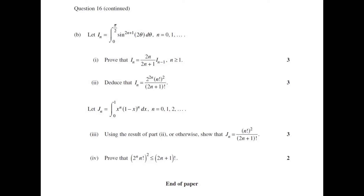Then we're given a new integral J_n, which is equal to the integral from 0 to 1 of x^n · (1-x)^n dx. Part 3 is: using the result of Part 2, or otherwise, show that J_n equals (n!)² / (2n+1)!. And then Part 4 is to prove that 2^n · (n!)² is less than or equal to (2n+1)!. Given the question is broken into four parts, I'll create a separate video for each part, so I'll now focus on proving Part 1.